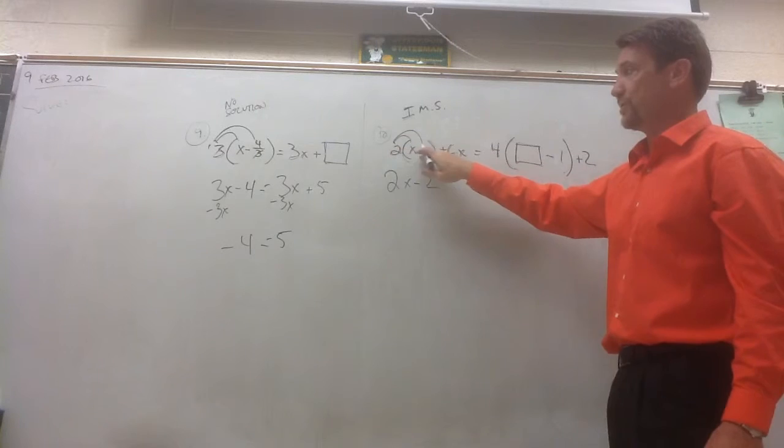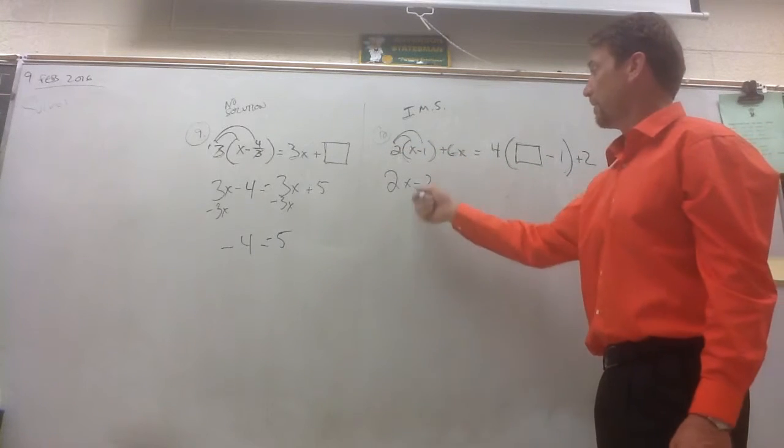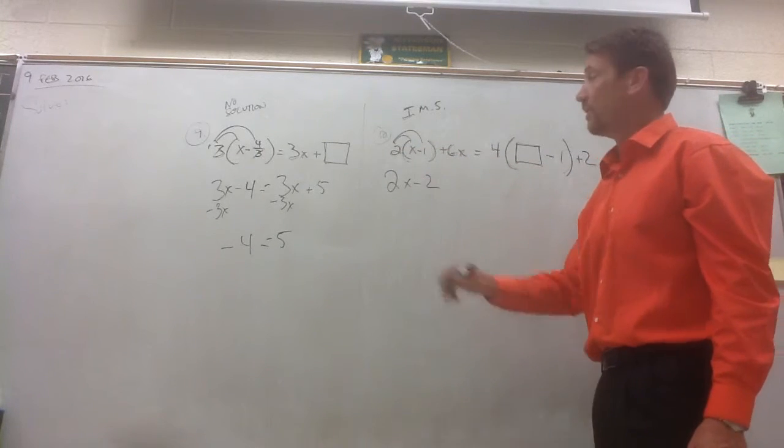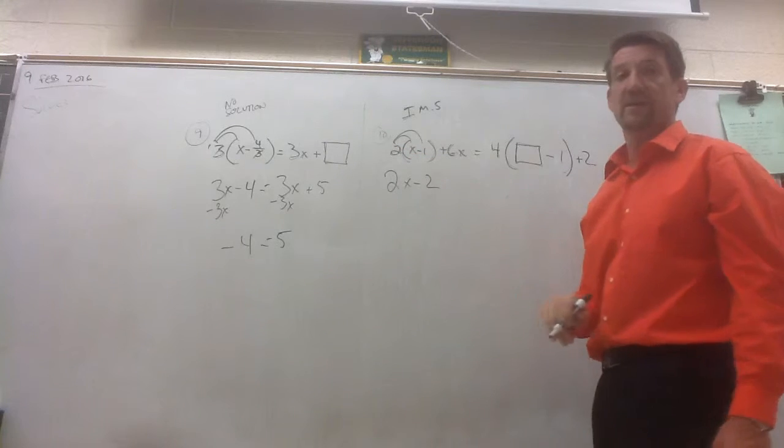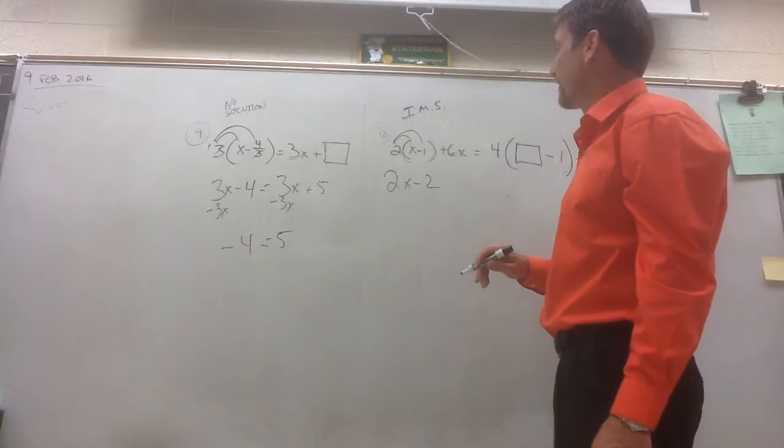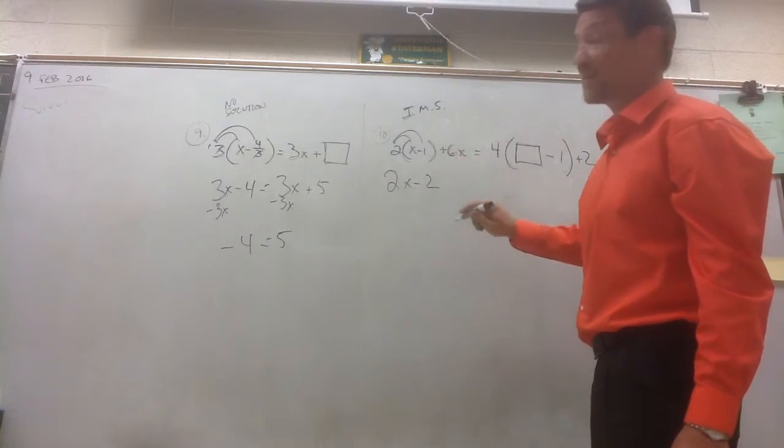2 times x is 2x. 2 times negative 1 is negative 2. So to simplify 2 times the quantity x minus 1, we would get 2x minus 2. Remember everything inside the parentheses multiplied by the term outside the parentheses. And we've got to add this other 6x.